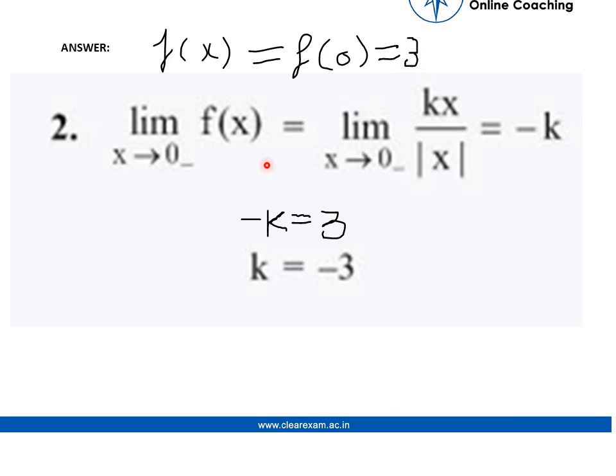So here we can see limit x tends to 0 minus, f(x) is equal to limit x tends to 0 minus. It is given in the question that f(x) would be equal to kx divided by mod x when the value of x is less than 0.